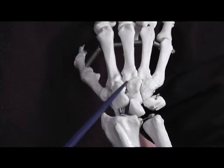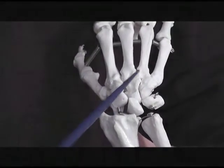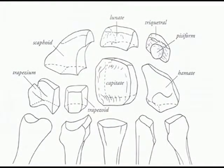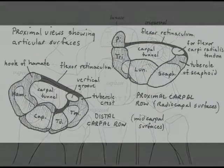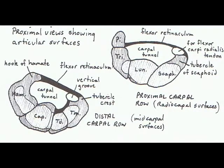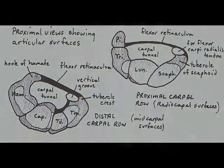The middle finger is the axis of rotation and also the keystone of the arch. If you look at the carpal bones from the end on, you'll see they're arranged in an arch. There are two arches: one formed from the triquetral, the lunate, and the scaphoid — with the lunate as the keystone. The distal arch is formed from the hamate, the capitate, the trapezoid, and the trapezium — with the capitate as the keystone.